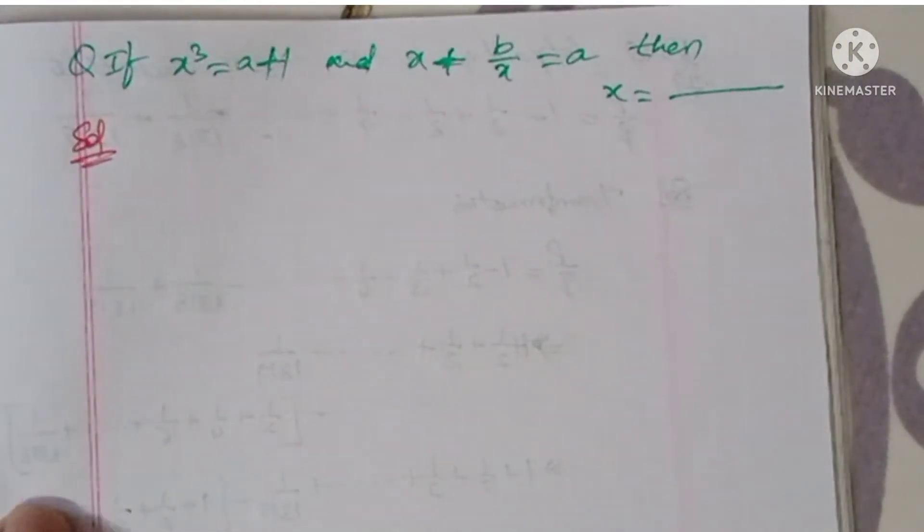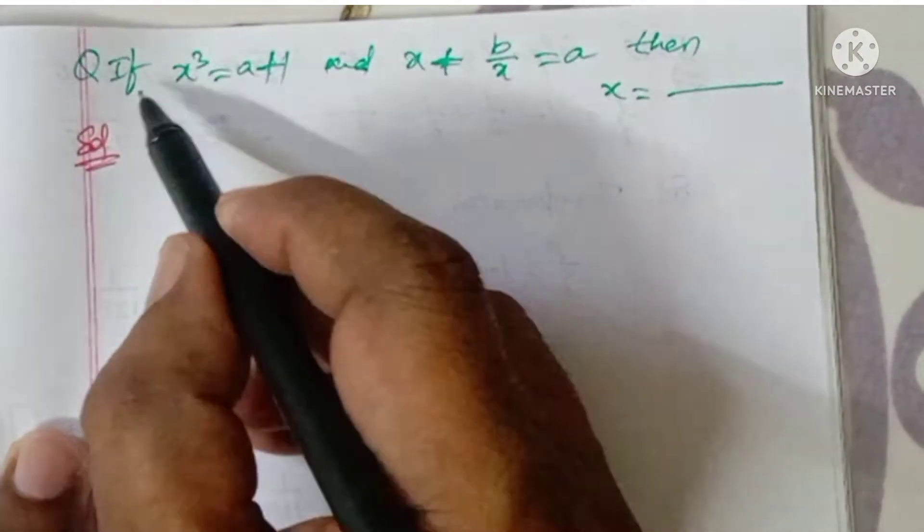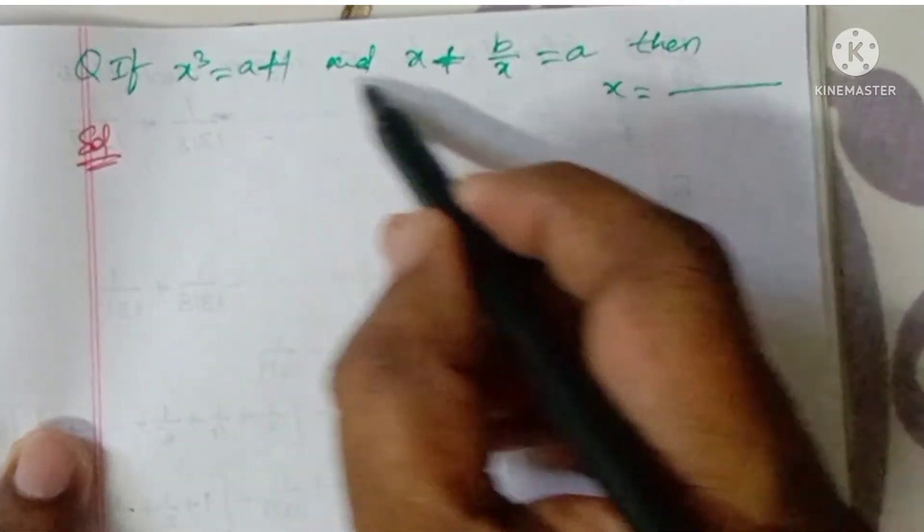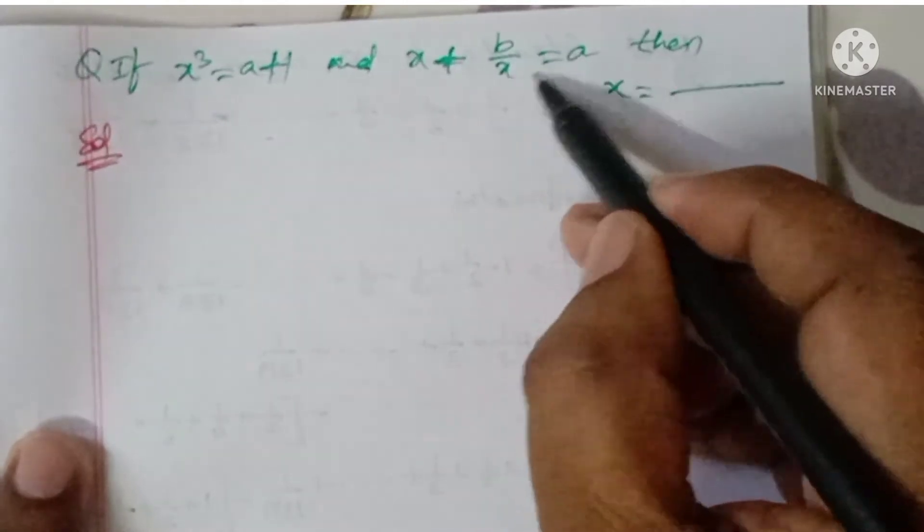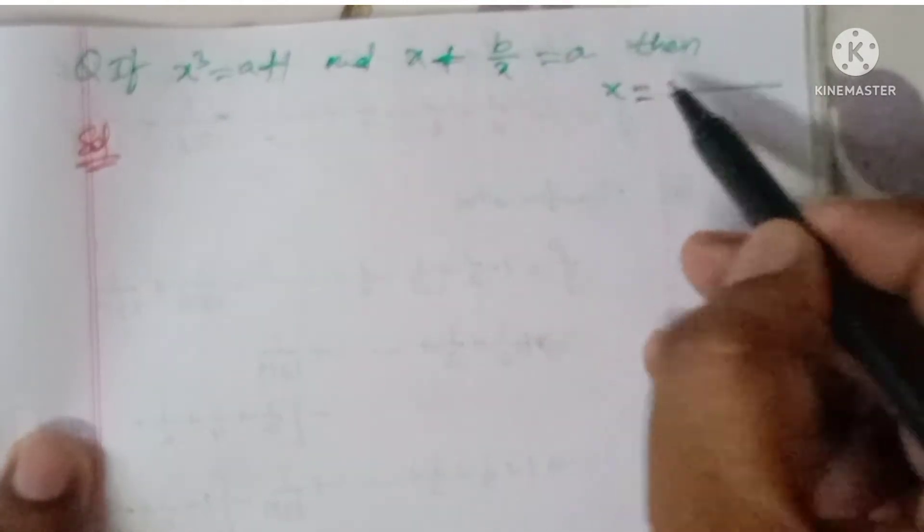Good morning, welcome to NCG Max. So the problem is: given if x³ = a+1 and x + b/x = a, then you have to find the value of x.